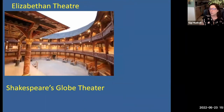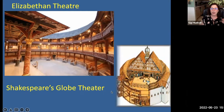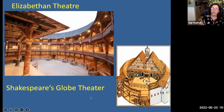The Elizabethan theater — the most famous being Shakespeare's Globe Theater — burned down a couple of times but was rebuilt to original specifications in 1997. People would sit all around: some in special booths, some in the gallery, and some would stand in front of the stage. It's an open-air theater, so if it rained you got wet, and since lighting was the sun, plays could only take place in the daytime.